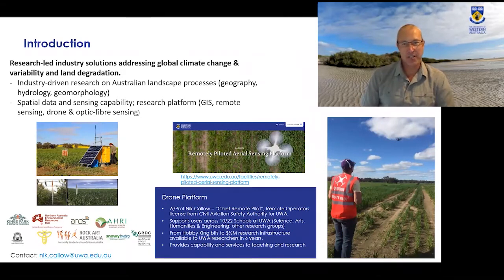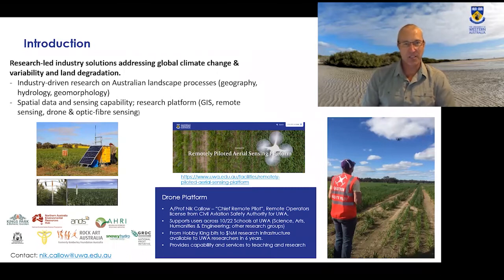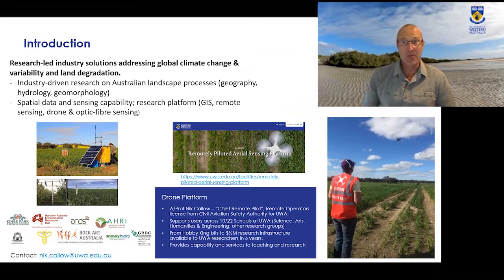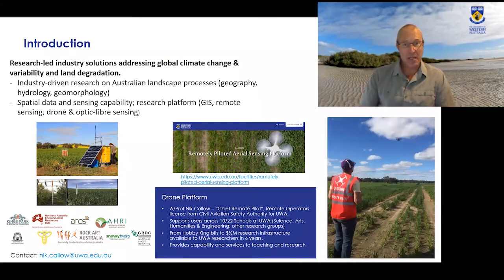I wanted to start with a quick introduction so you can understand a little bit about what I do at UWA. I'm both a lecturer and a researcher, really interested in how we use a whole range of different remote sensing technologies to answer questions. Physical geography is about studying key environmental processes that operate within landscapes and the way that humans interact with them — that's what defines geography, as opposed to environmental sciences, which are more technically focused.